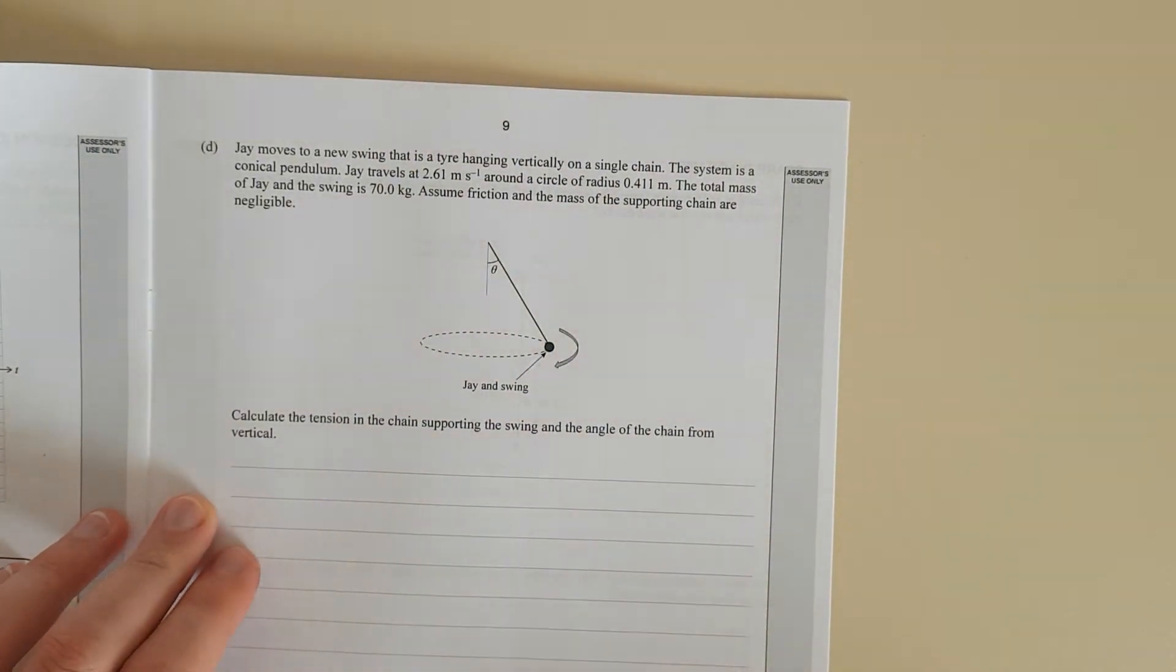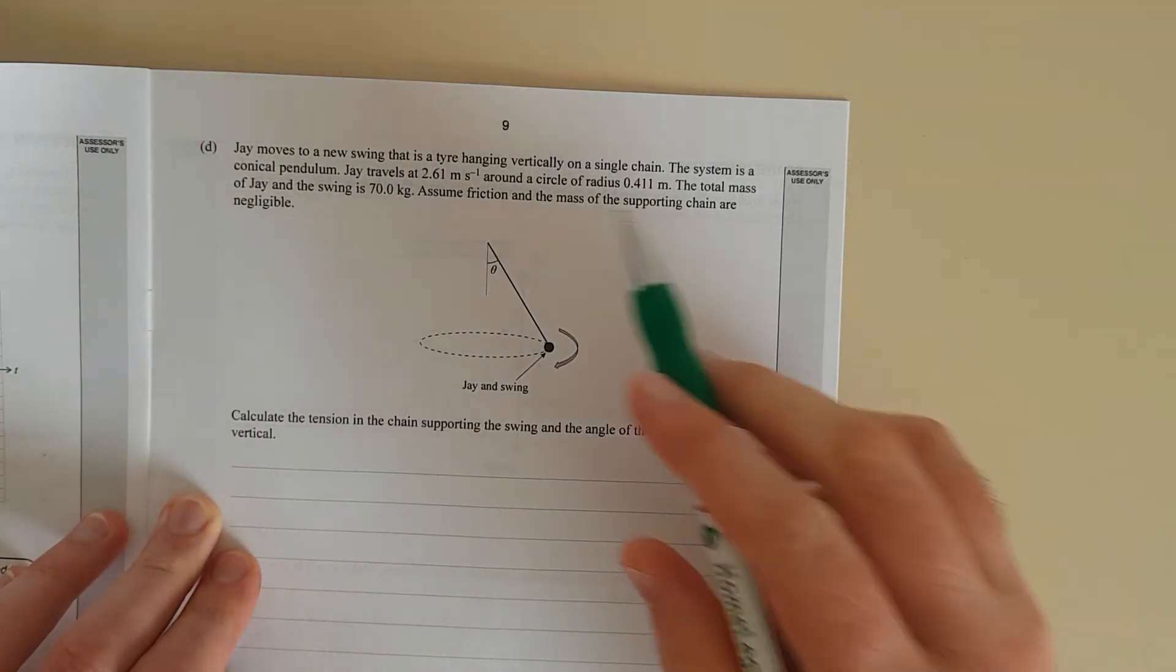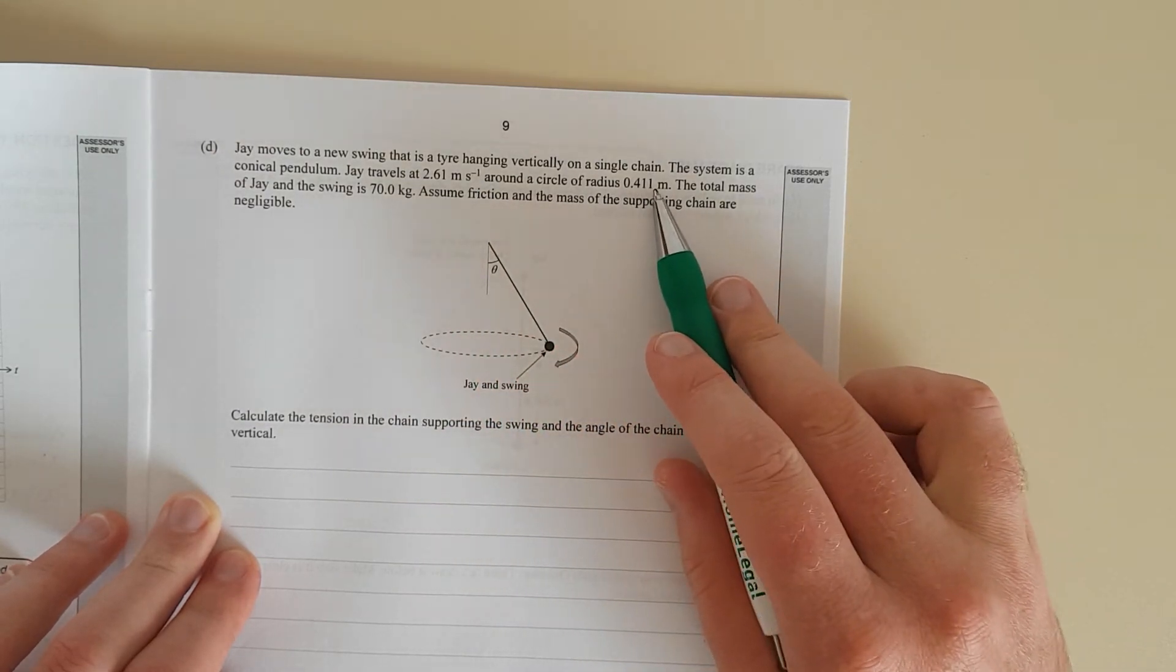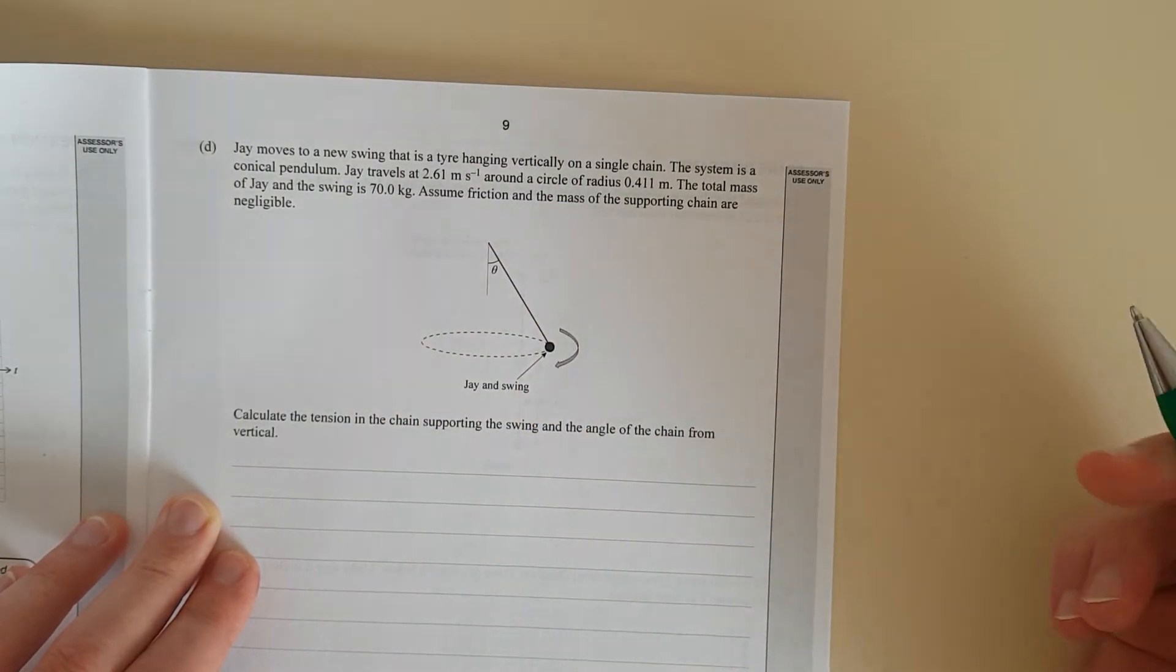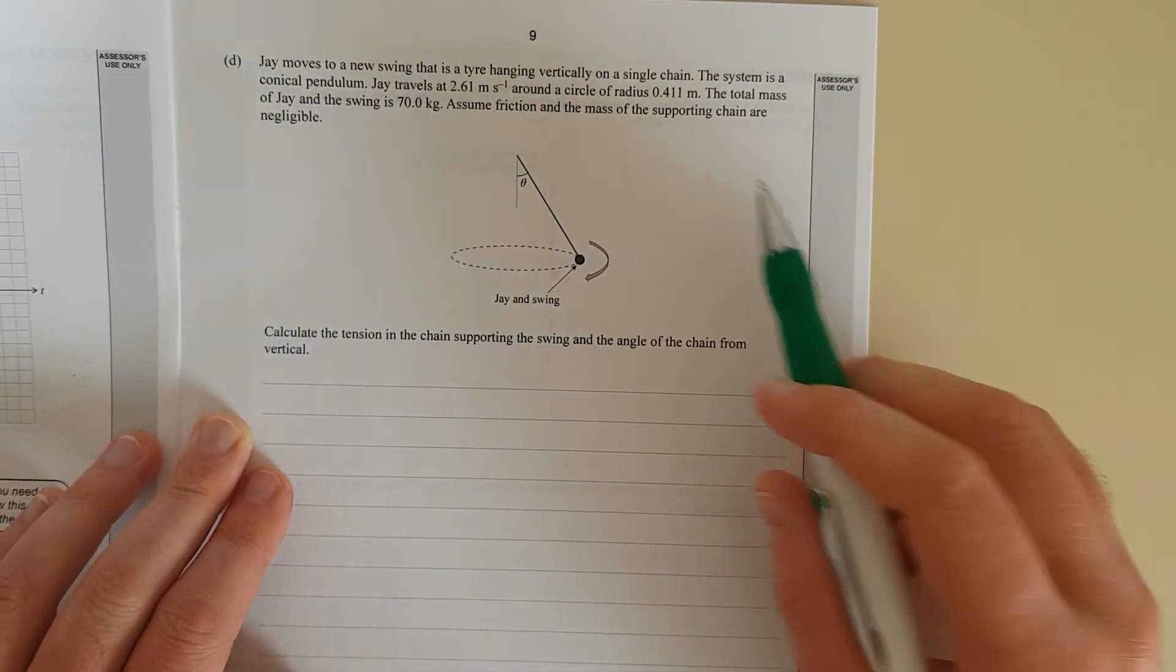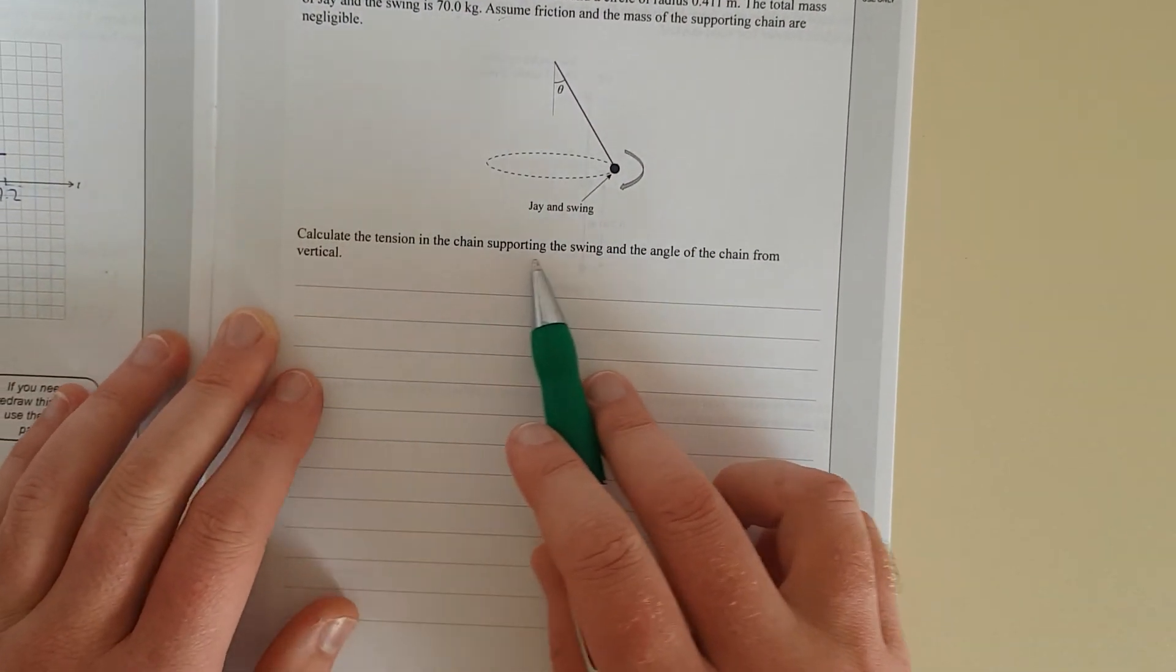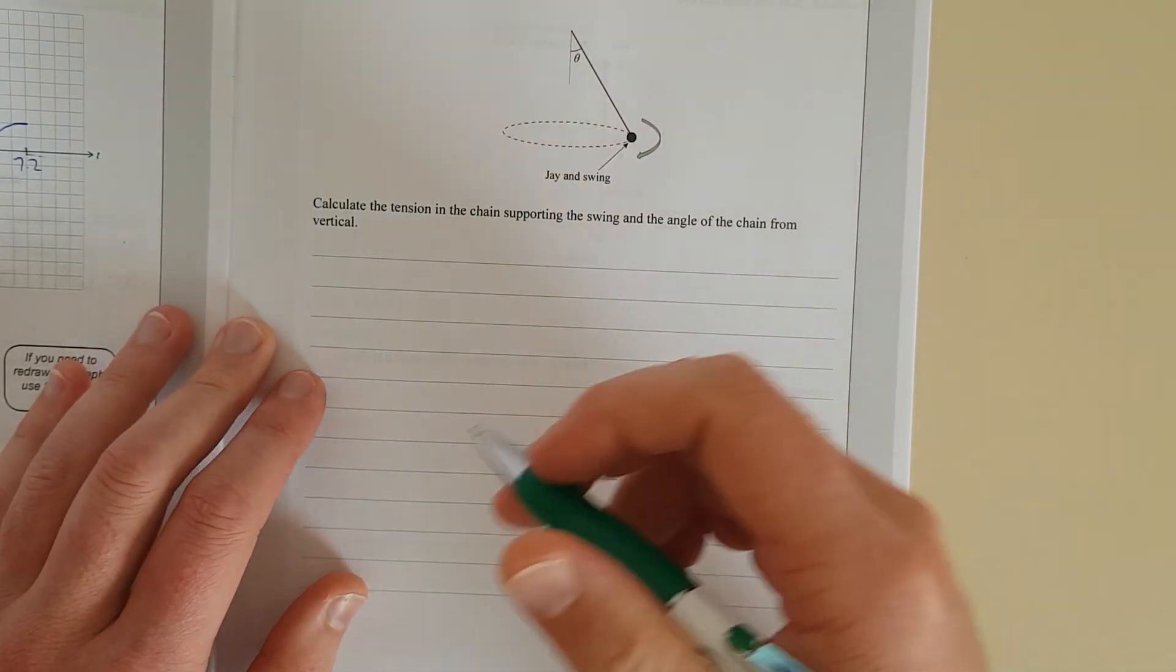Next question. J moves to a new swing that has a tire hanged vertically on the swing chain. The system is a conical pendulum. J travels at 2.61 meters per second down the circle. The radius is 0.411. The total mass in J is 70 kilograms. Friction, mass, negligible. Calculate the tension in the chain supporting the swing and the angle of the chain from the vertical. Right. So draw a free body diagram.